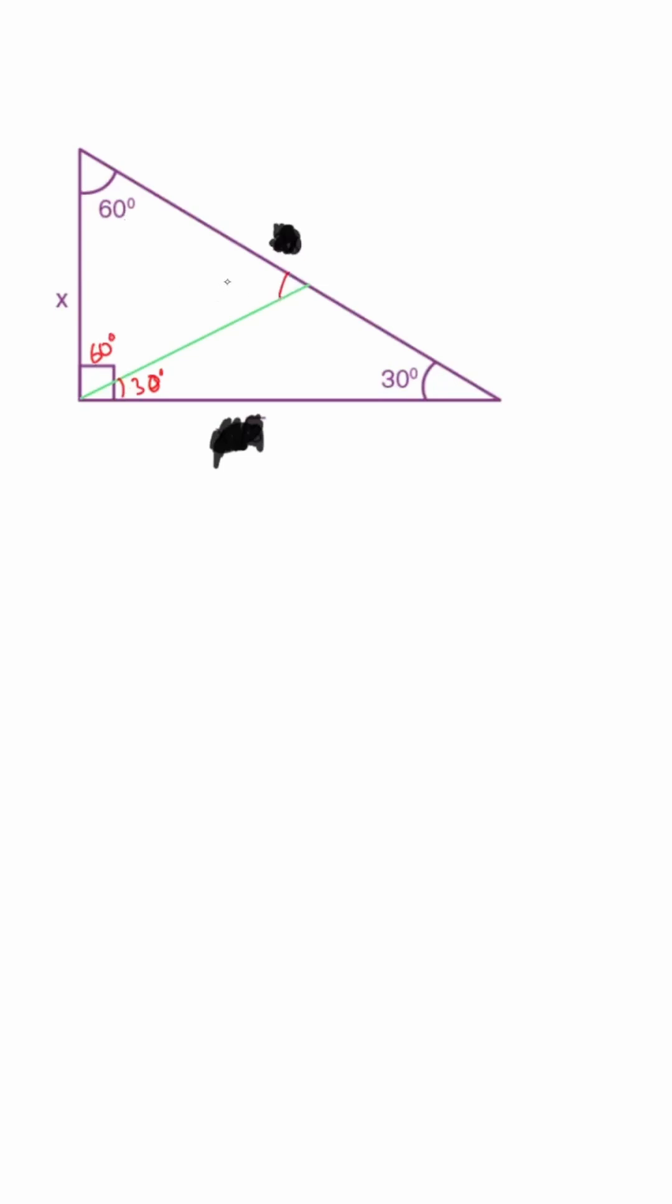So if this is 60, that's 60, this part is also 60. And we got an equilateral triangle. So in an equilateral triangle, if this is x, this part is also x, and this part is also x.